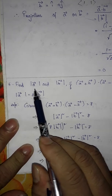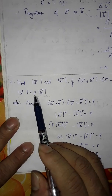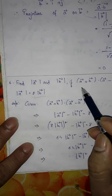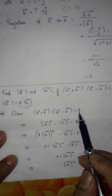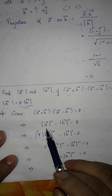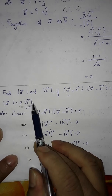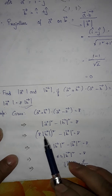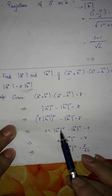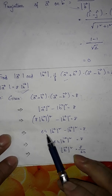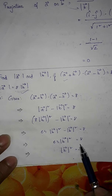Question number 6: Find magnitude of a and magnitude of b if (a + b)·(a − b) = 8 and magnitude of a = 8 times magnitude of b. We have two conditions. Given (a + b)·(a − b) = 8. Use the formula: (a + b)·(a − b) = |a|² − |b|² = 8. Substitute magnitude of a = 8|b|, so (8|b|)² − |b|² = 8, giving 64|b|² − |b|² = 8, so 63|b|² = 8. Therefore |b|² = 8/63.